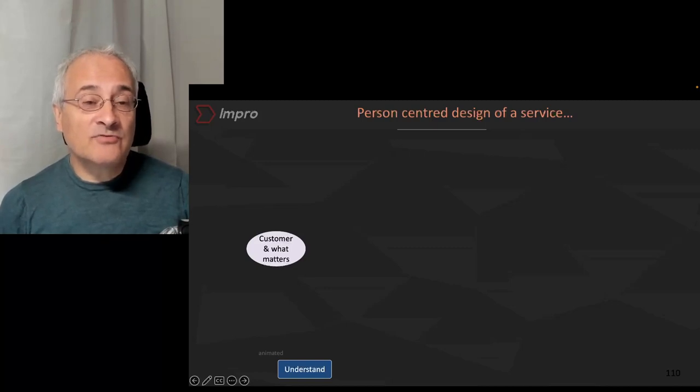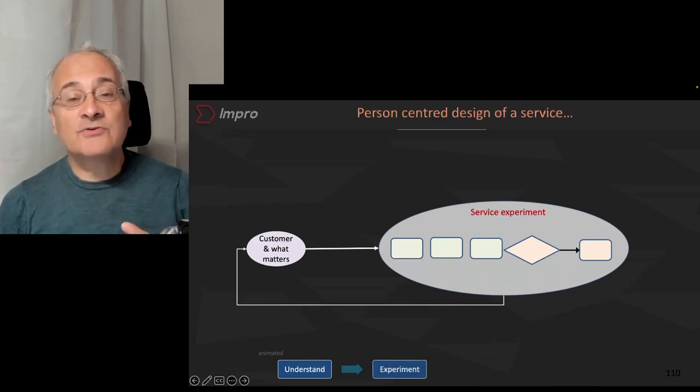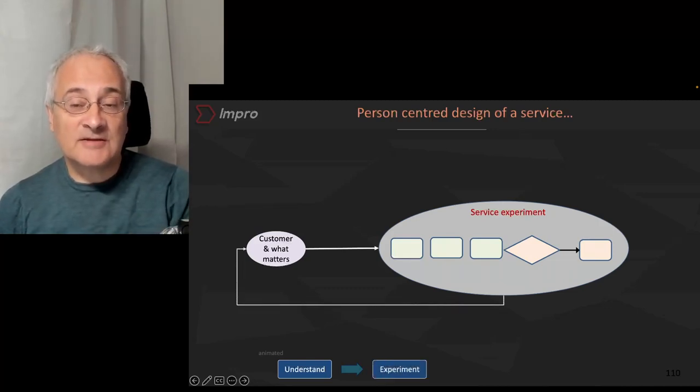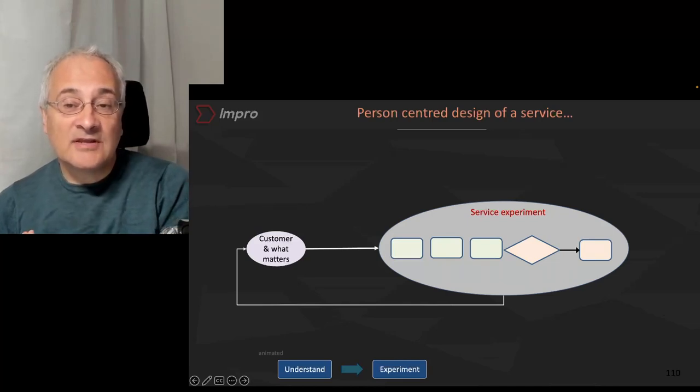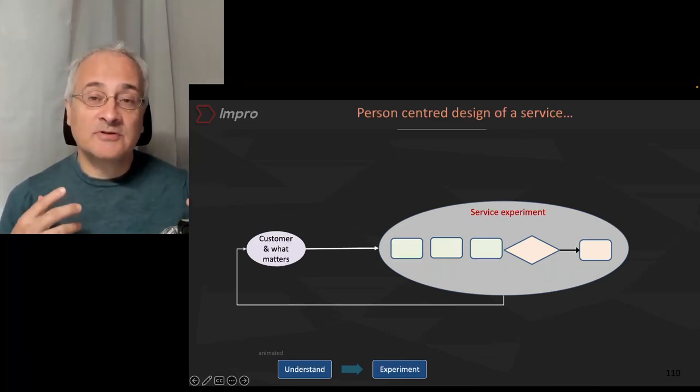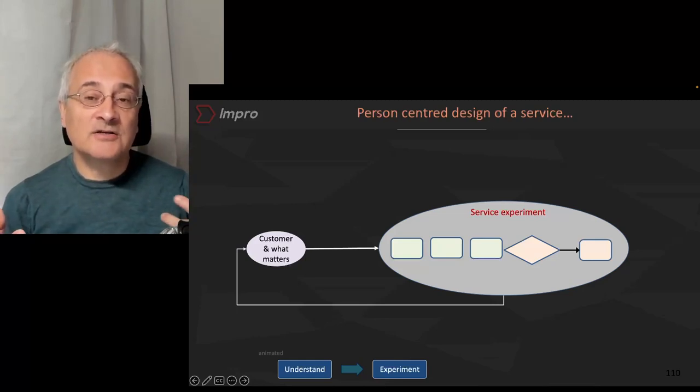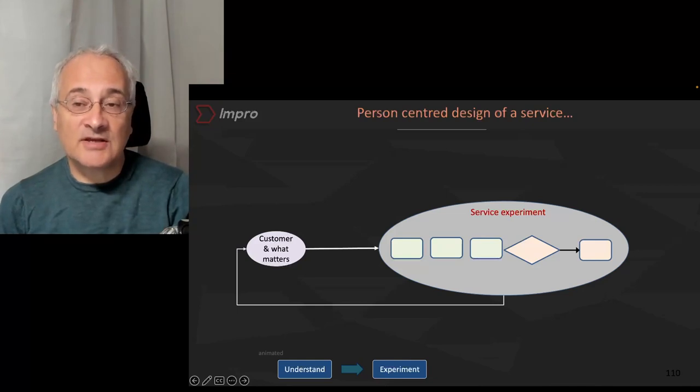Then we move on to the experiment. And what we do here is we experiment with customer demands as a team. We have permission to develop a new way of working with a new set of principles. And those are systems thinking-based sets of principles.